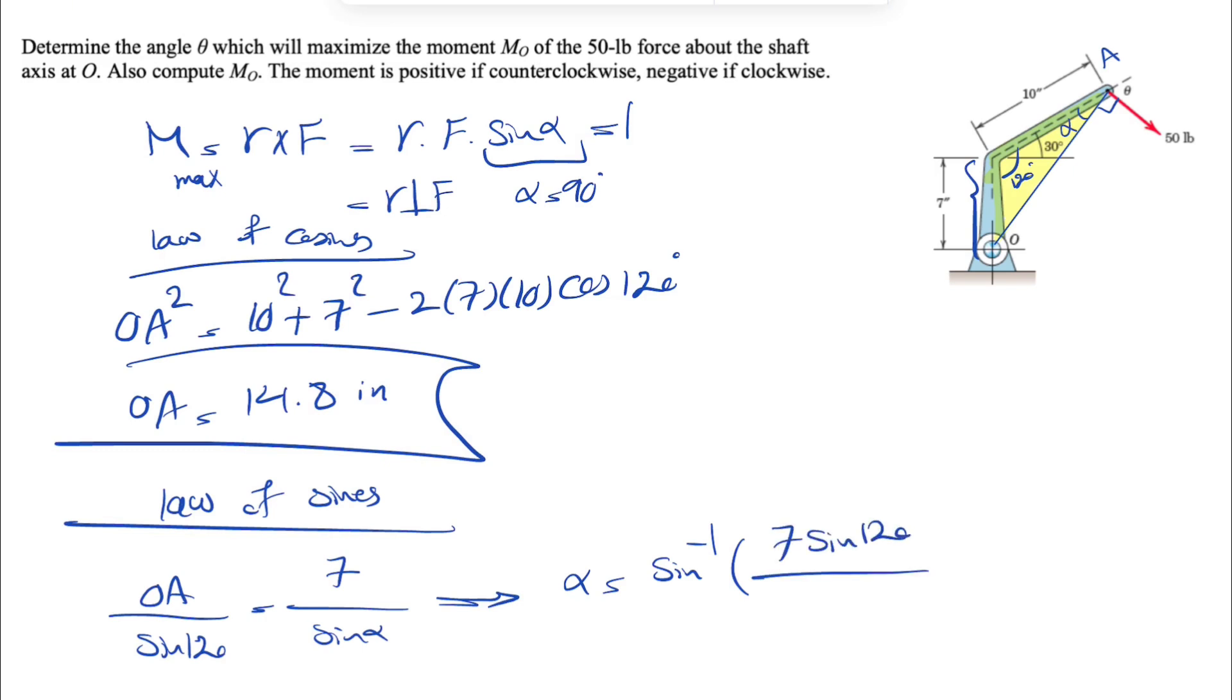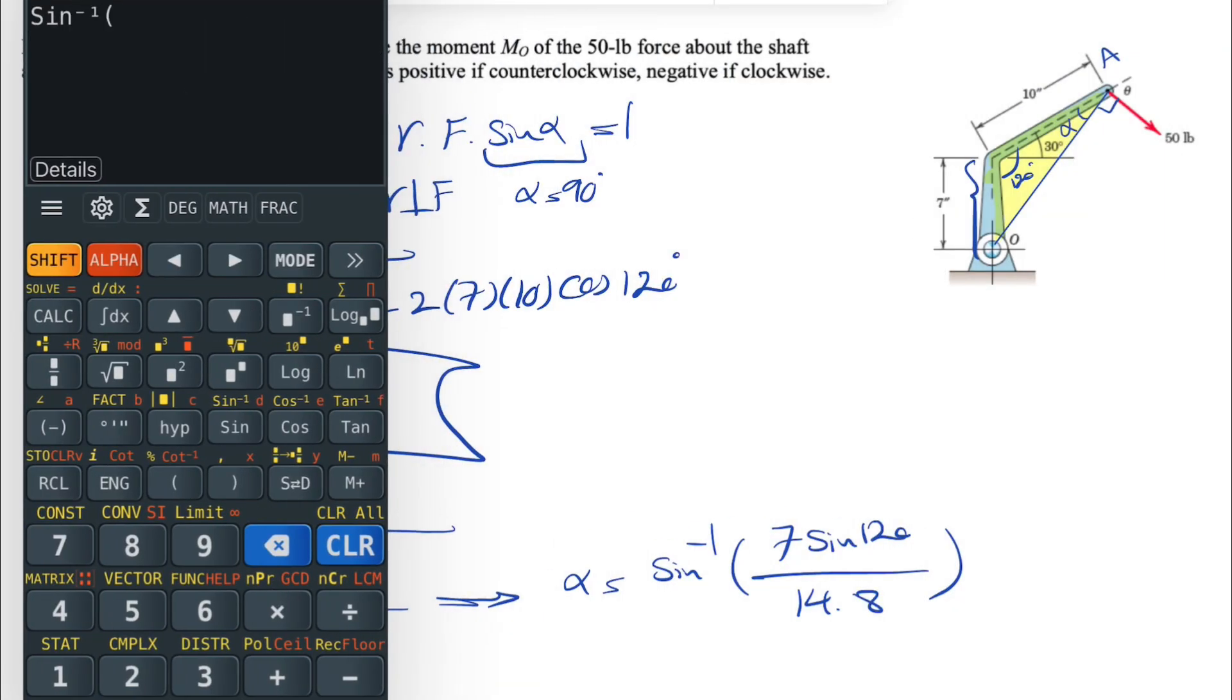From the previous step, we got it at 14.8. Let's see what we get. Sine inverse of 7 sine of 120 divided by 14.8 - that's going to be 24.18. So now it's pretty easy.